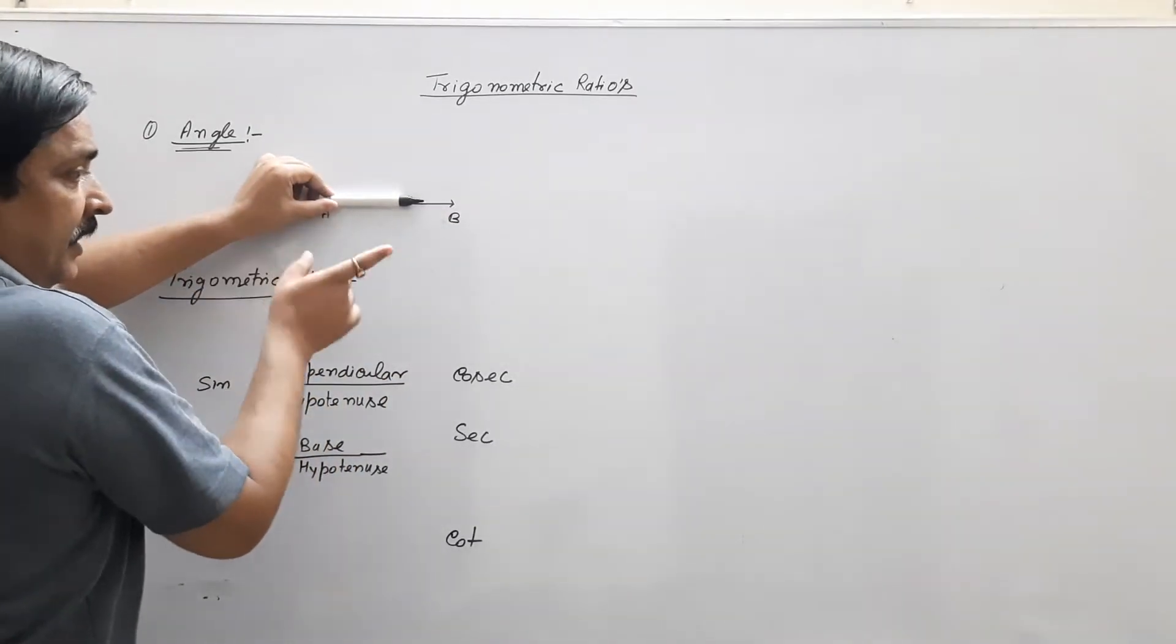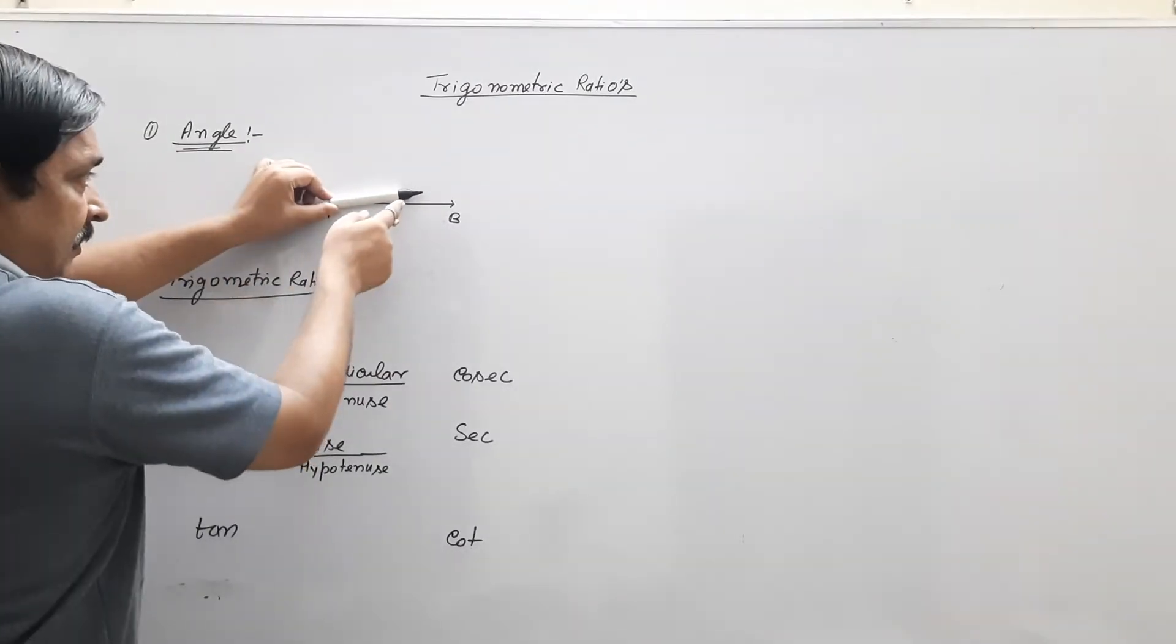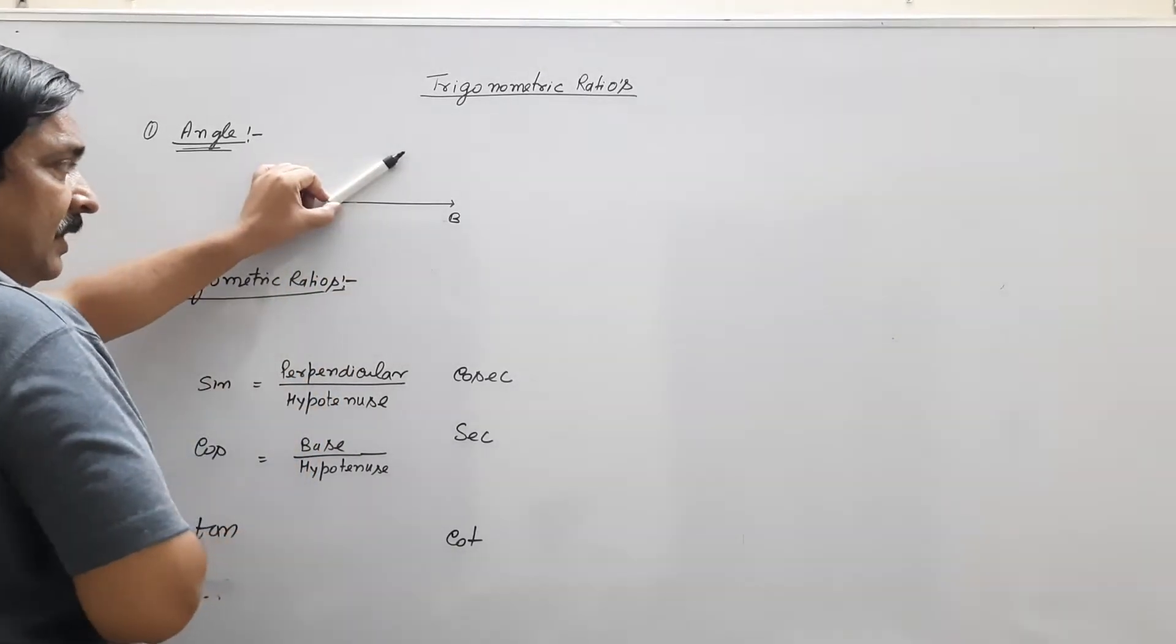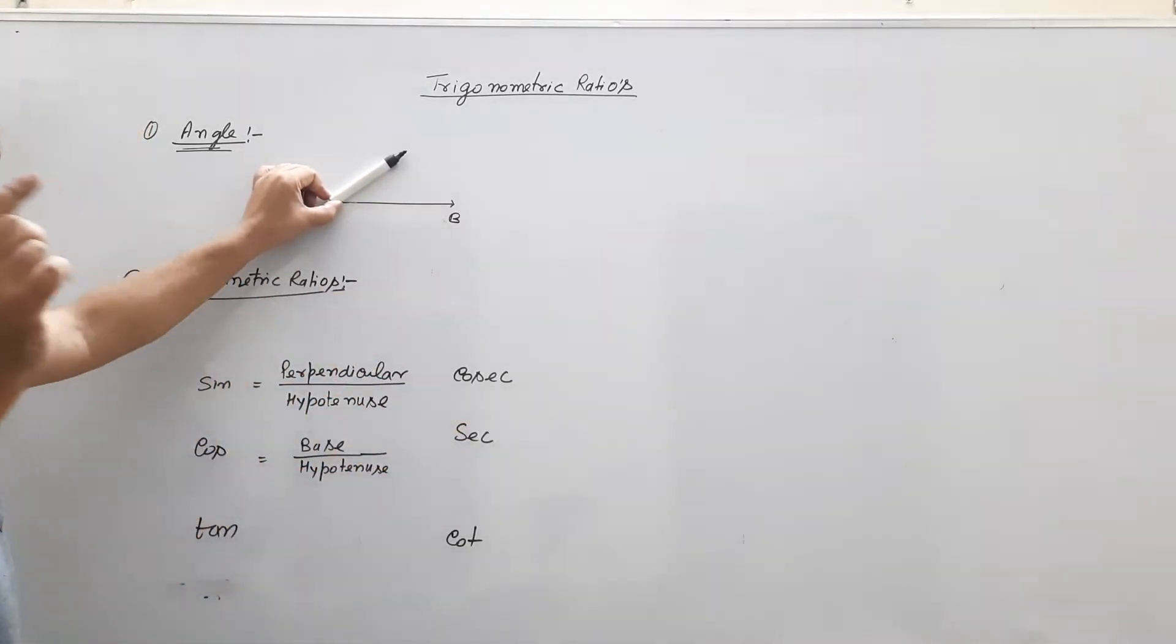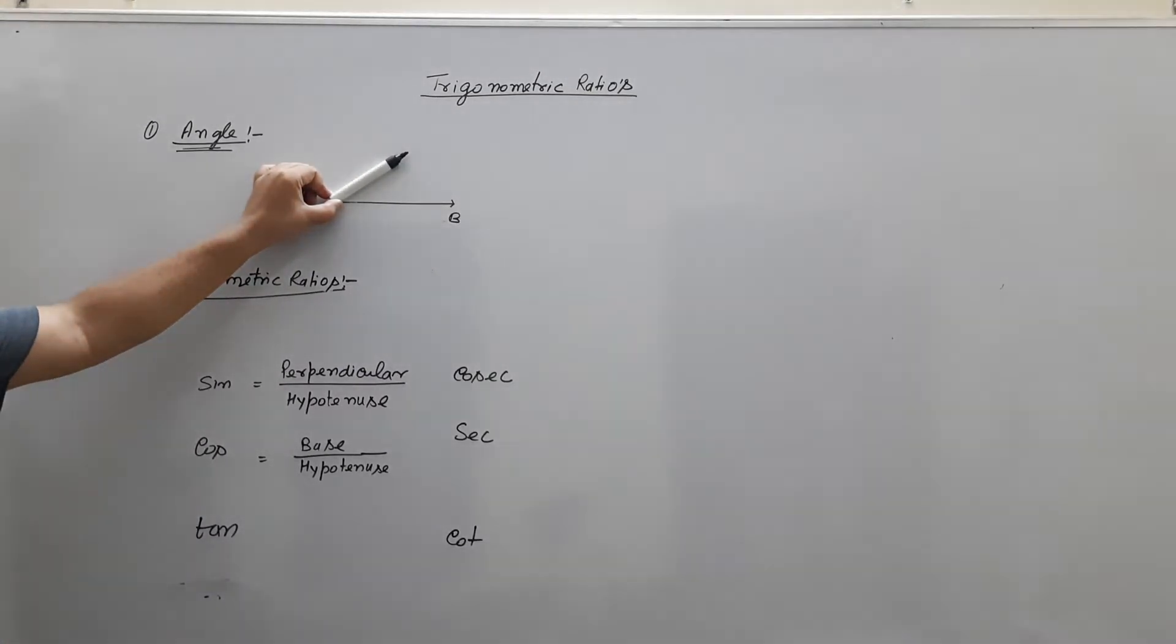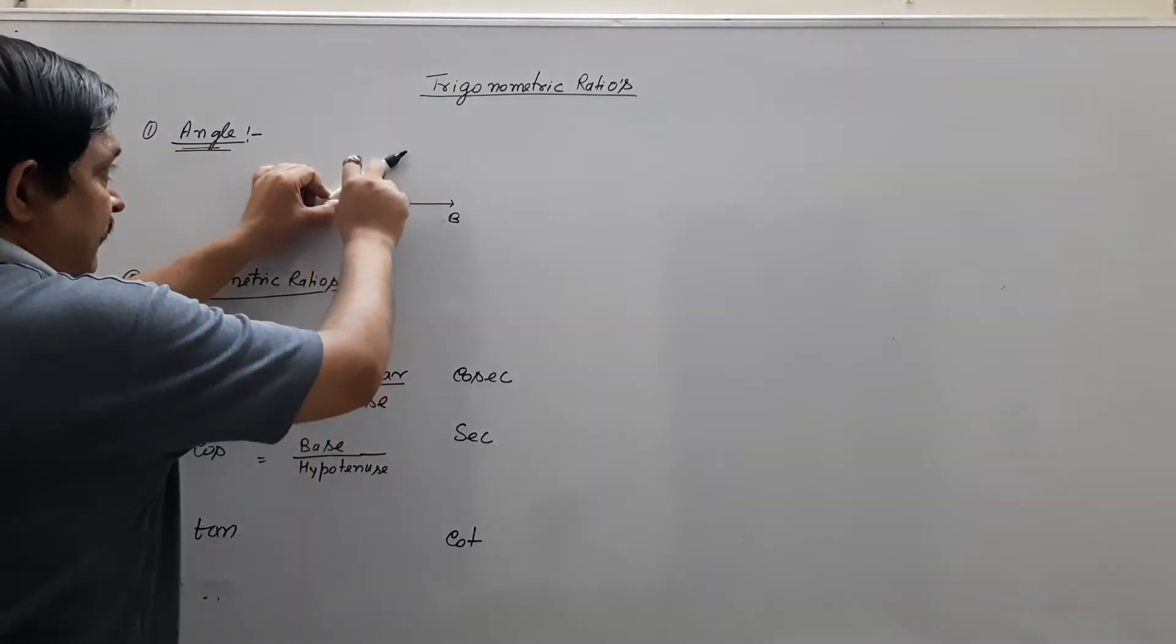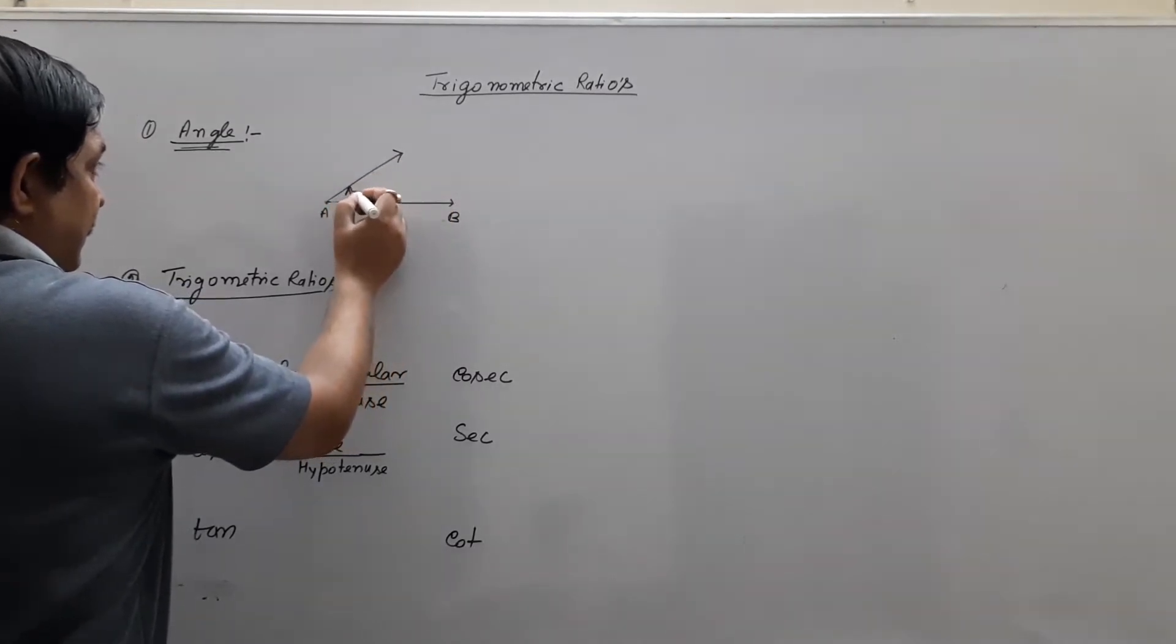AC is rotated. Point C is fixed here, anticlockwise direction or clockwise direction. It means when a line rotated with respect to other line, when one end point is fixed, then displacement is called angle.